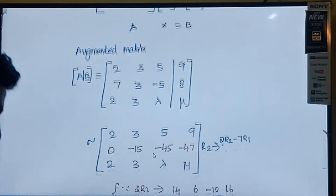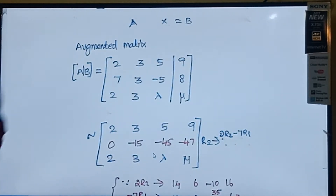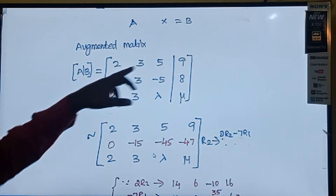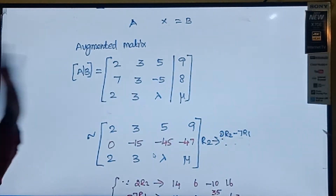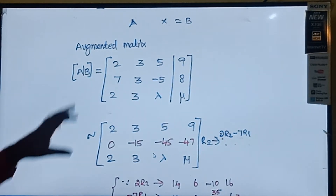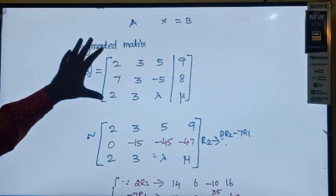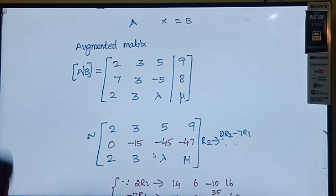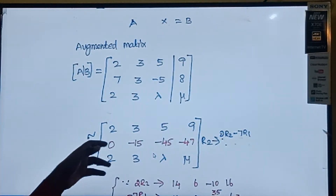According to the condition, the first element must be 1. But here there is no chance to reduce to 1 because all three rows have leading values 2, 7, and 2. So I am not changing any rows or columns since there is no value of 1. So I am going to change R2.